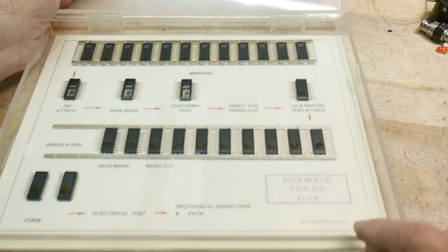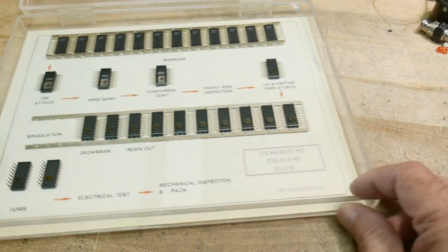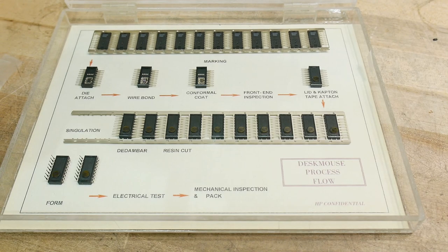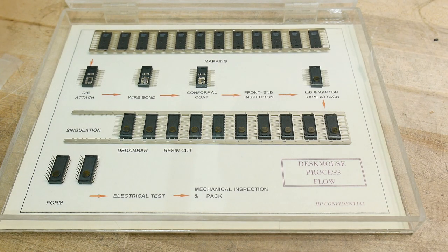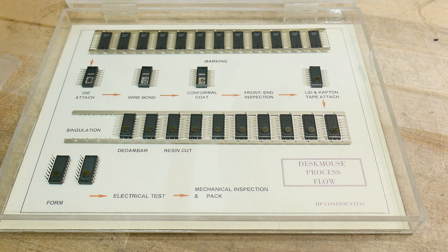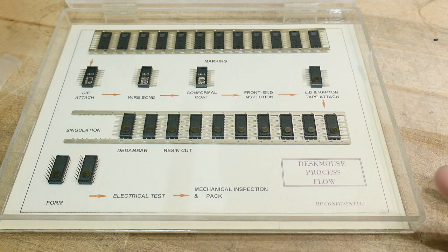So let me zoom down a bit here. The first thing to notice is down here it says HP Confidential. So yeah, don't tell your friends. This was a demo of the manufacturing process of the optical mouse sensor.